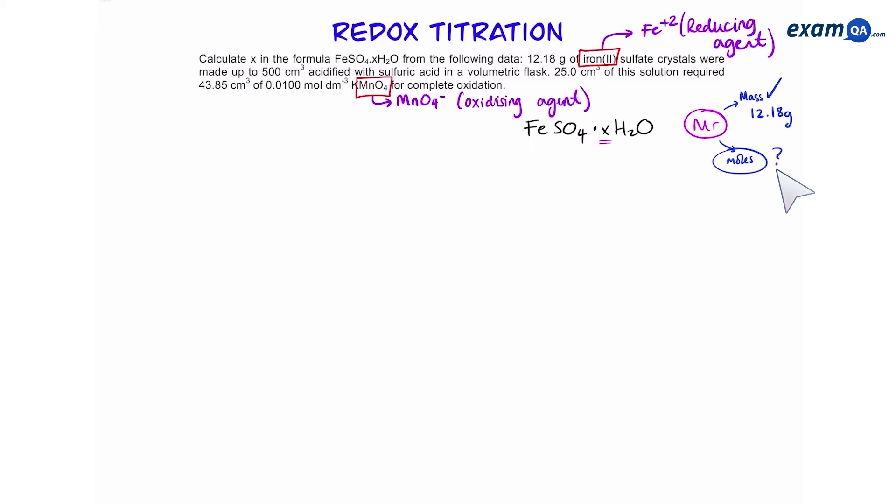First of all, we'll look at the question and identify the oxidizing agent and the reducing agent. So we have manganate and iron 2+ in the question.